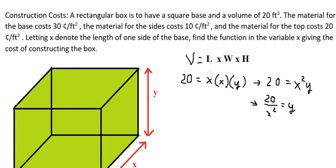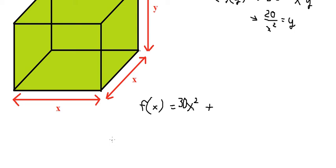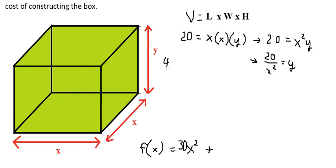The next one, the cost of the sides, is 10 cents per square foot. In this situation, if we look carefully at the box, we have four sides.